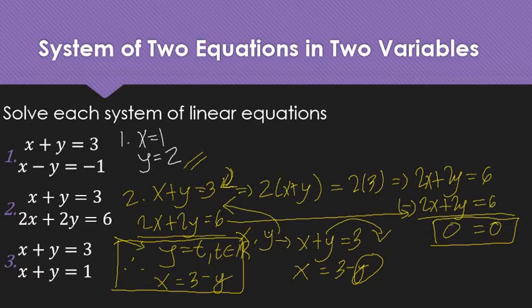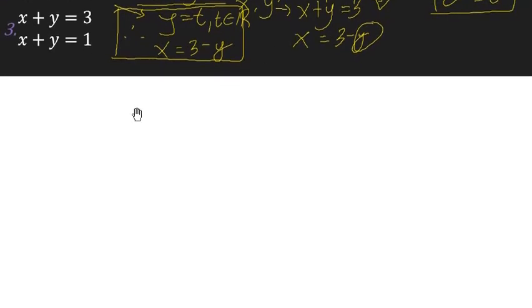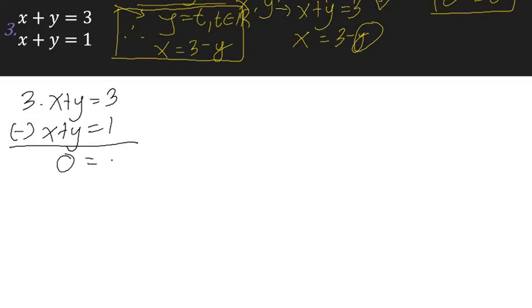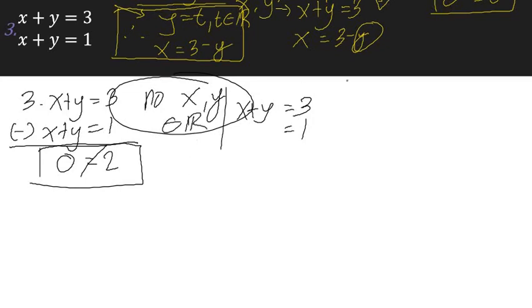Now for the third system, we have x plus y equals 3, and x plus y equals 1. If I'm going to eliminate them, I can use subtraction. This will become 0, and this will become 0 as well. But 3 minus 1 equals 2, and we know that 0 is not equal to 2. This is indicating that there are no numbers x and y that, when you add them, can be both 3 and both 1. There is no value of x and y, an element of real number, that this will happen simultaneously. Hence, we can say that there is no solution to this system.